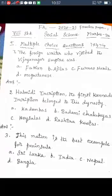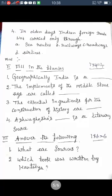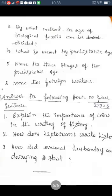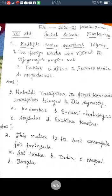Good morning students. Today I am going to explain the first round test practice papers one and two. These practice papers are related to the first two lessons — the test portions. The two lessons are Sources and Geographical Features of India. There are two papers; I'll explain one by one. First section: multiple choice. Second: fill in the blanks. Third: answer in one or two sentences. Fourth: answer in four or five sentences.